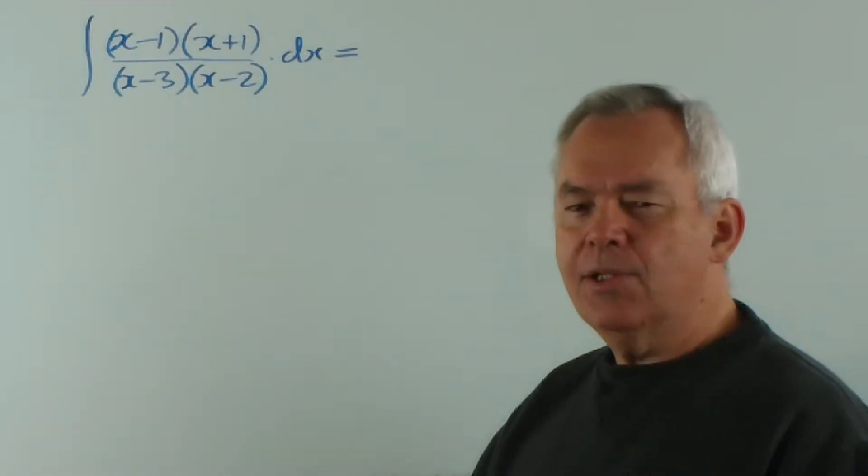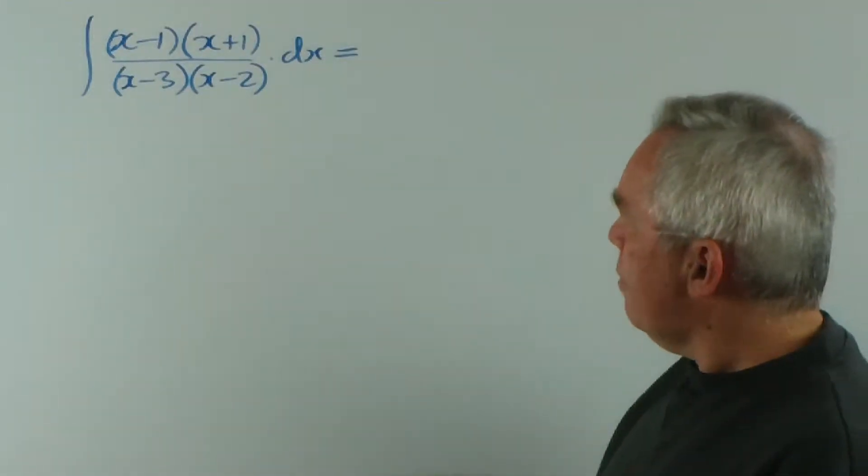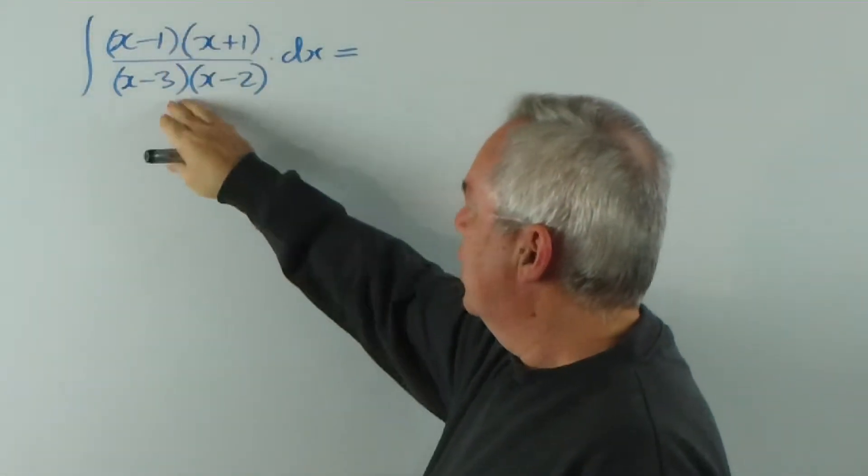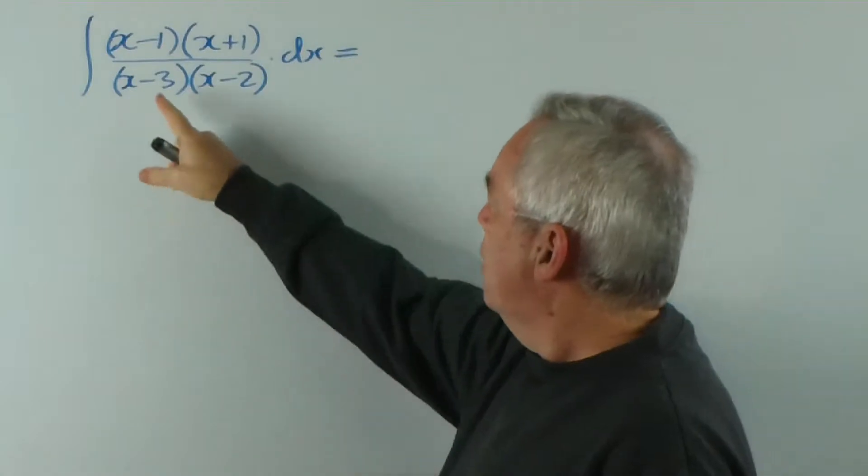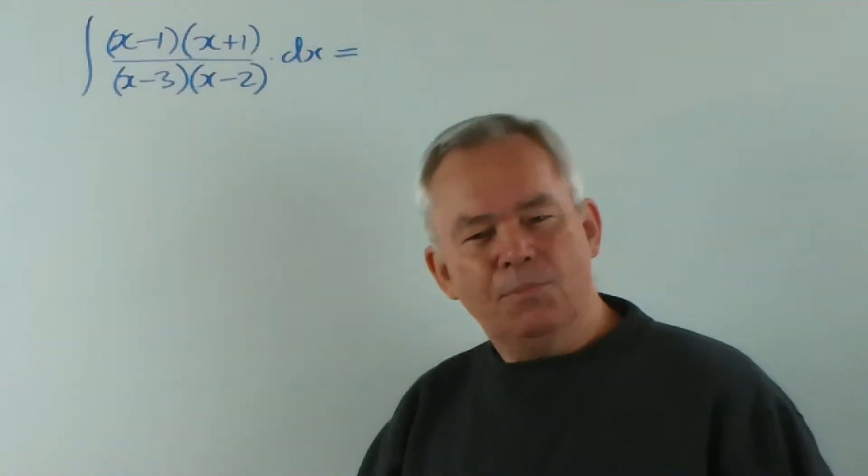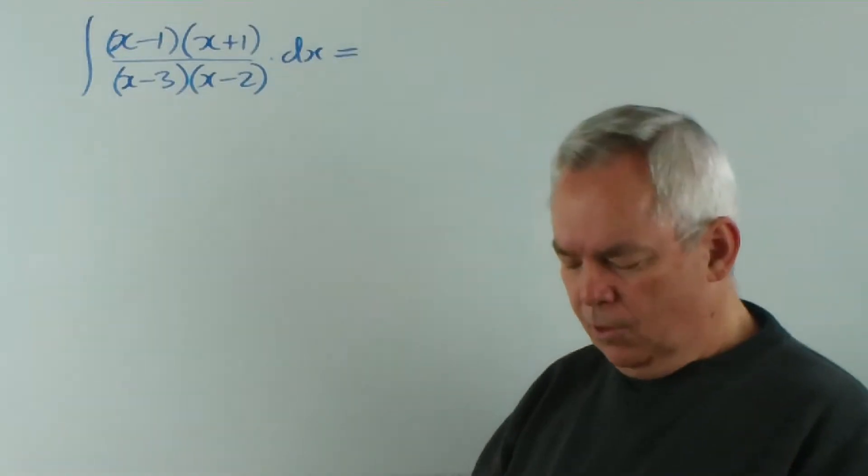G'day. This is the twelfth of Jim Caronius's integrals. Without wasting any time, you can see that we have one polynomial divided by another. You can see they're both of the same order, they're both x squared, which means that we're going to divide first of all.